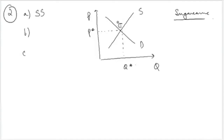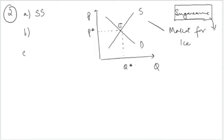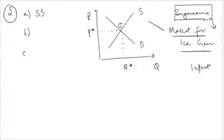We are still looking at the market for ice cream. Because the sugarcane supply has been affected, this will affect the price of sugar, which is derived from sugarcane. Because the price of sugar has increased due to the destruction in the sugarcane industry, the market for ice cream will also get affected, since input prices are now changing. We learned that changing input prices is one factor that shifts the supply curve — so the supply will shift leftward, meaning supply decreases.